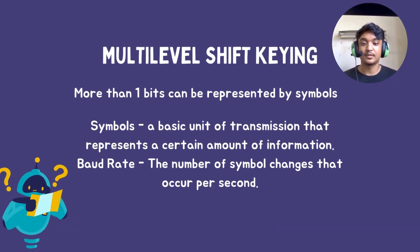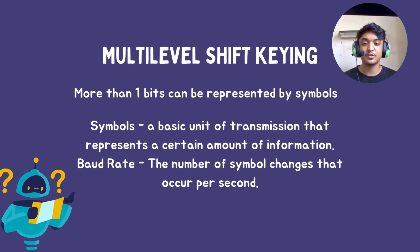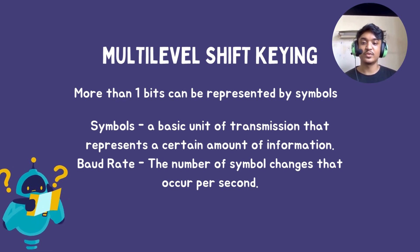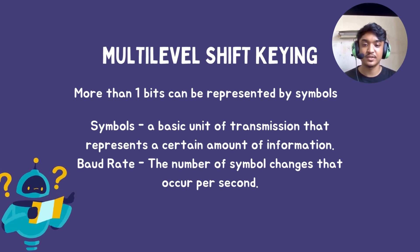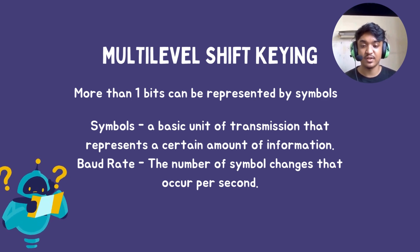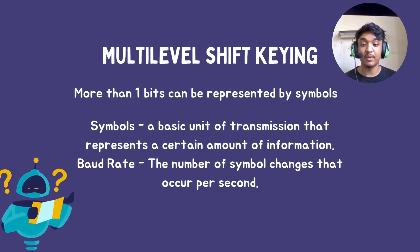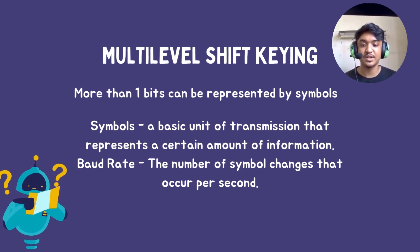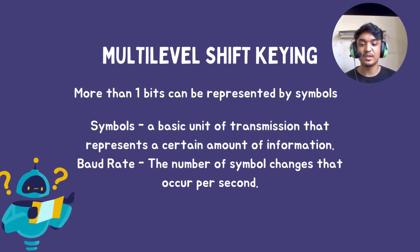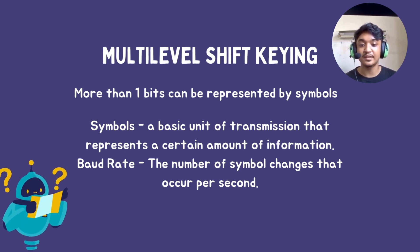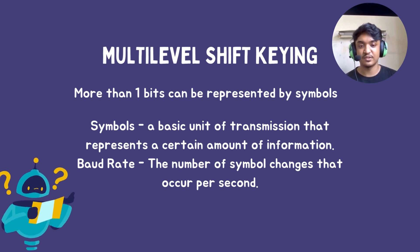The previous slide only looked at a change for 1 bit, but now with multi-level shift keying, more than 1 bit can be represented by symbols, where a symbol is a basic unit of transmission that represents a certain amount of information. The baud rate is the number of symbol changes that occur per second. A higher baud rate means higher data transmission, which is better than the previous single-bit shift keying.